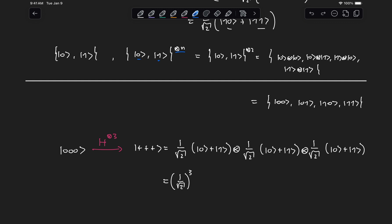And then we can use the distributive law to apply the tensor product between each of the components of these three superposition states. So first, we're going to get the zero tensor product with zero tensor product with zero.